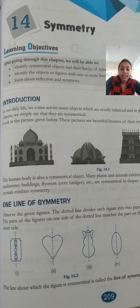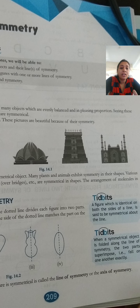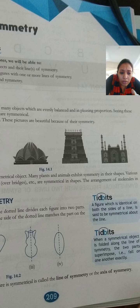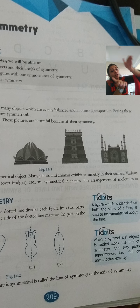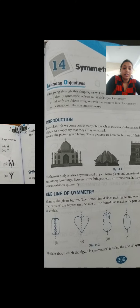The line about which the figure is symmetrical is called the line of symmetry or the axis of symmetry. A figure which is identical on both sides of a line is said to be symmetrical about that line. When a symmetrical object is folded along the line of symmetry, the two parts superimpose, that is, they fall on one another exactly.